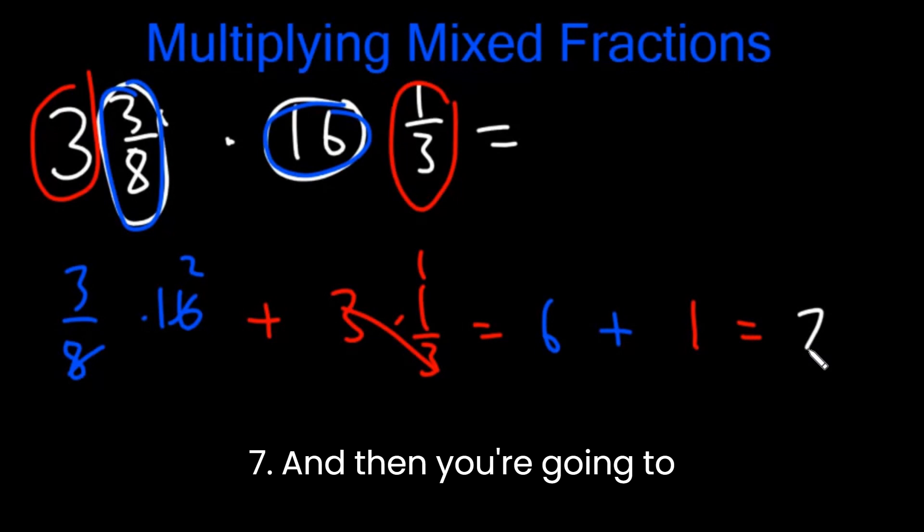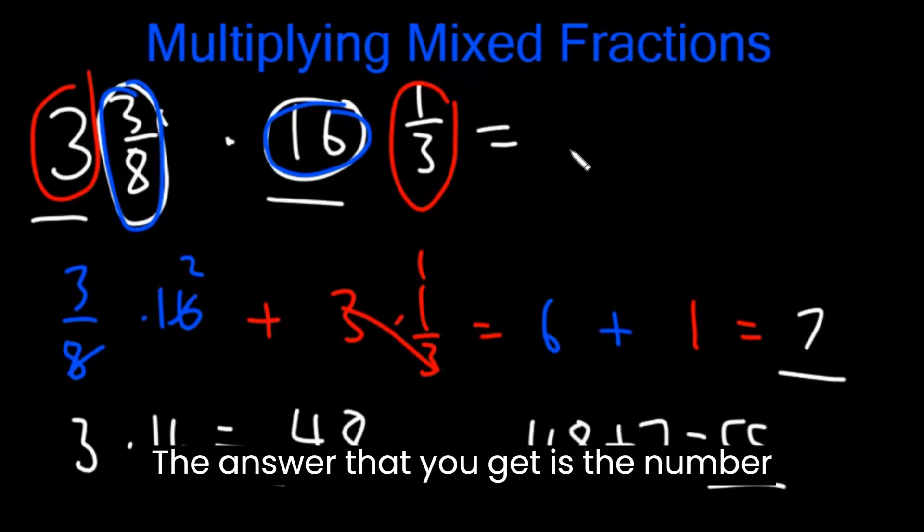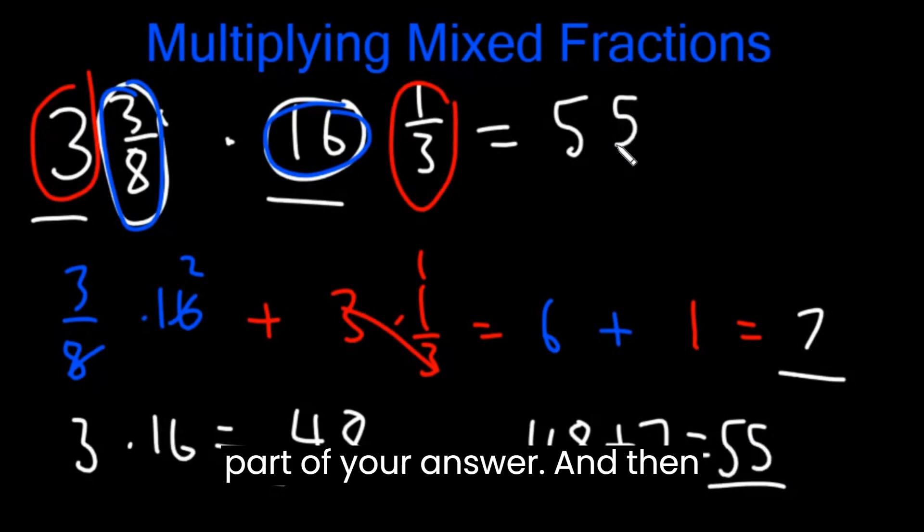And then you're going to multiply the number parts together. So 3 times 16, that's 48. Then you will add these two. 48 plus 7 is 55. The answer that you get is the number part of your answer.